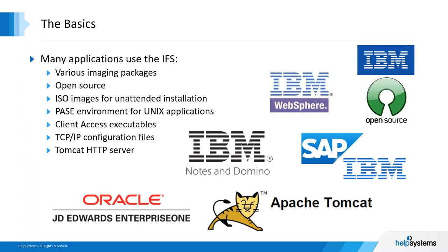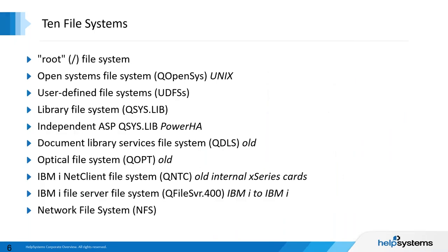You might be wondering what applications are using the IFS. Various imaging packages have been used for years for storing things like PDFs and spreadsheets. Open source can run on IBM i — things like Python and Git, different HTTP servers. IBM WebSphere has been using this area for years. We also use it for PTFs and ISO images. Help Systems ships their software and stores components in the IFS. The PASE environment allows running Unix applications on IBM i, things like SAP or JD Edwards Enterprise One. Client access executables, TCP/IP configurations, and HTTP servers like Tomcat are also out there.